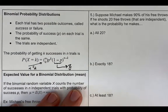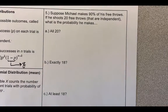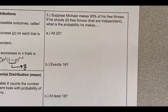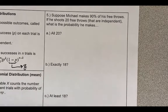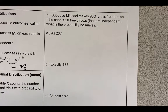Let's use this formula and do some examples. Suppose Michael makes 90% of his free throws. If he shoots 20 free throws that are independent, what is the probability that he makes all 20? This is a binomial experiment: there is a clear success or failure — either he makes it or he doesn't — the probability on each shot is 90% and doesn't change, and the free throws are independent. All three bullet points are satisfied.